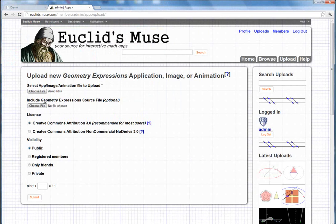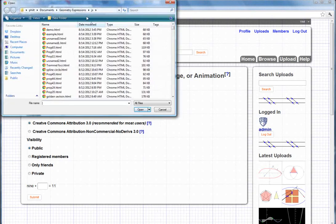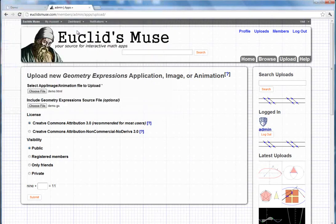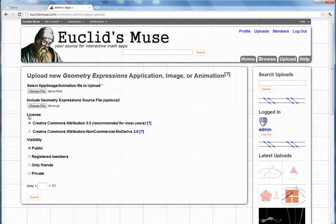And in this case, I also want to include the geometry expression source file. So I'll just go to where I saved that and include it here. And that way, people will be able to download the source as well as being able to download the interactive shareable version as the HTML file. And then we'll just stick with that license.